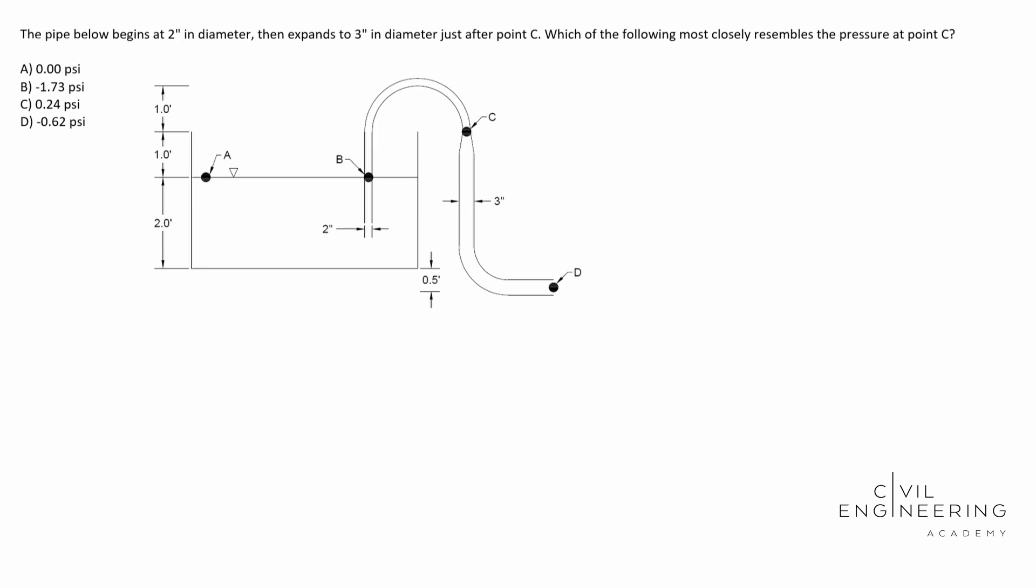So today we have a hydraulics hydrology problem and in particular we're going to be solving for the pressure at a point. So here's what the question says. The pipe below begins at 2 inches in diameter then expands to 3 inches in diameter just after point C. Which of the following most closely resembles the pressure at point C? And then we see our four options there.